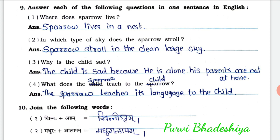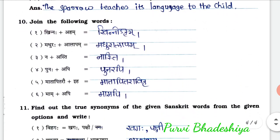3rd: Why is the child sad? — The child is sad because he is alone; his parents are not at home. 4th: What does the sparrow teach to the child? — The sparrow teaches its language to the child.